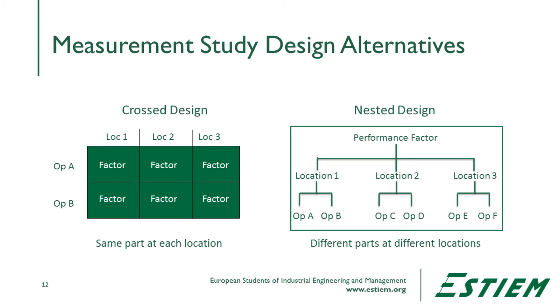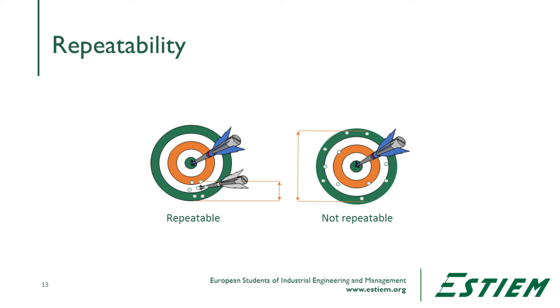The preferred approach for a greenbelt is the crossed design, where all people and equipment actually operating the process are evaluated for the same set of parts using the same measurement system. Repeatability means the same people using the same equipment, same parts, same operator, same units, same setup conditions, and the same short-term variation. Ideally we would see results grouped very closely together, indicating high repeatability — the measurement system is capable of doing the right things.